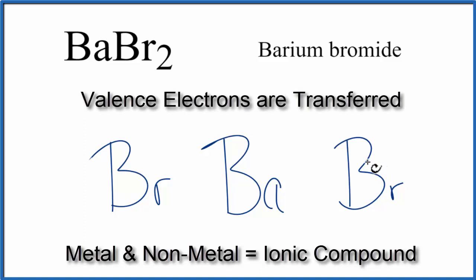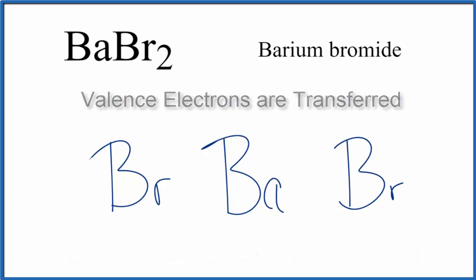That means that the valence electrons are going to be transferred from the metal to the non-metals. When we look on the periodic table, barium has two valence electrons. It's in group 2, so just like the other elements there, it has two valence electrons. Bromine is in group 17, sometimes called 7A. It has seven valence electrons.